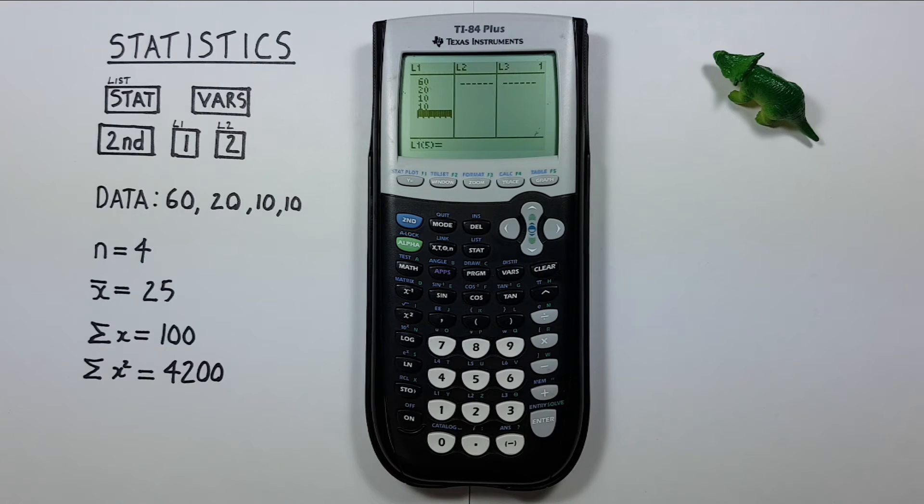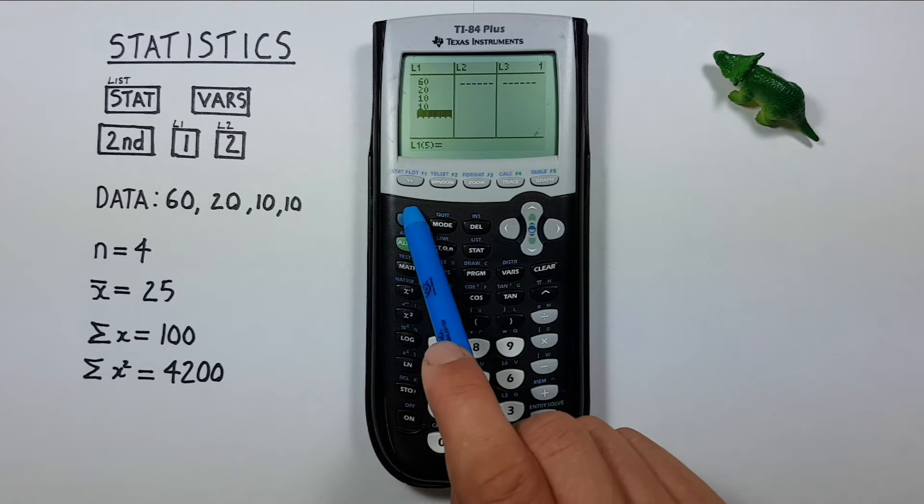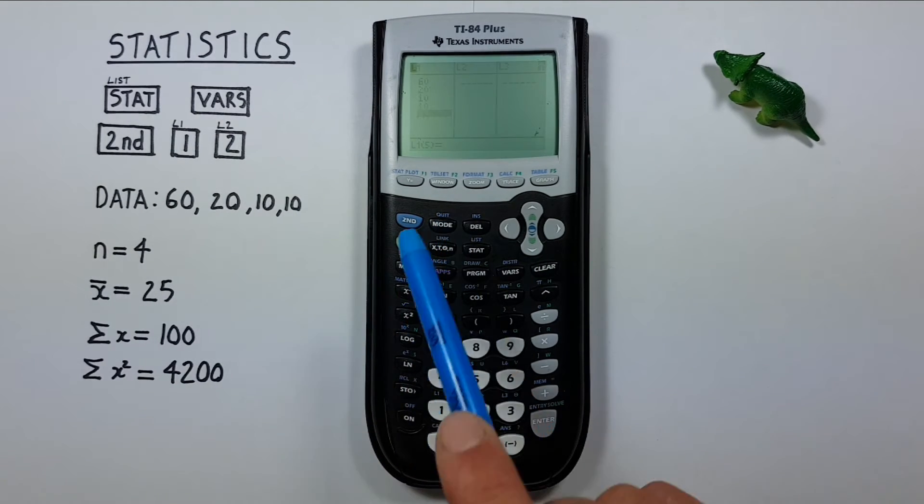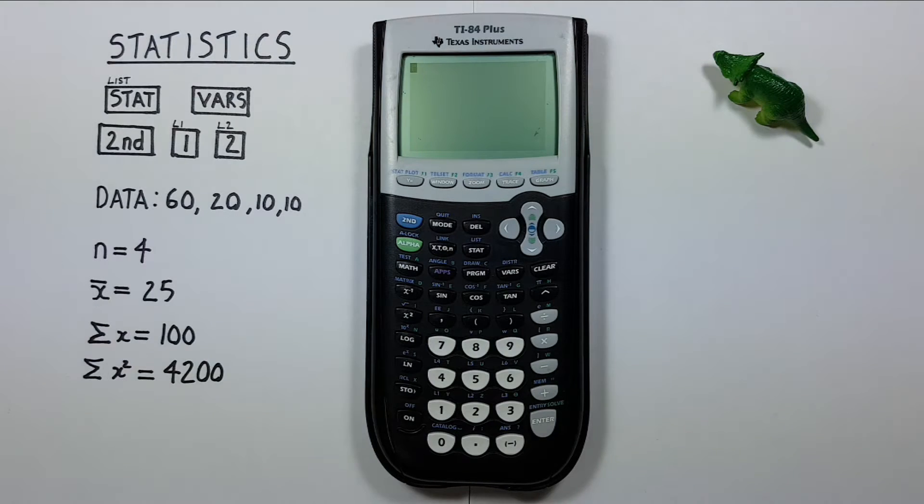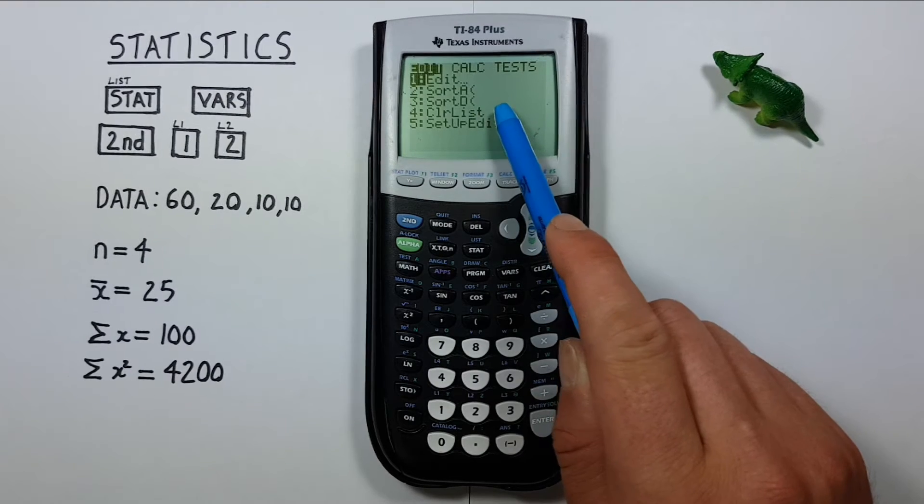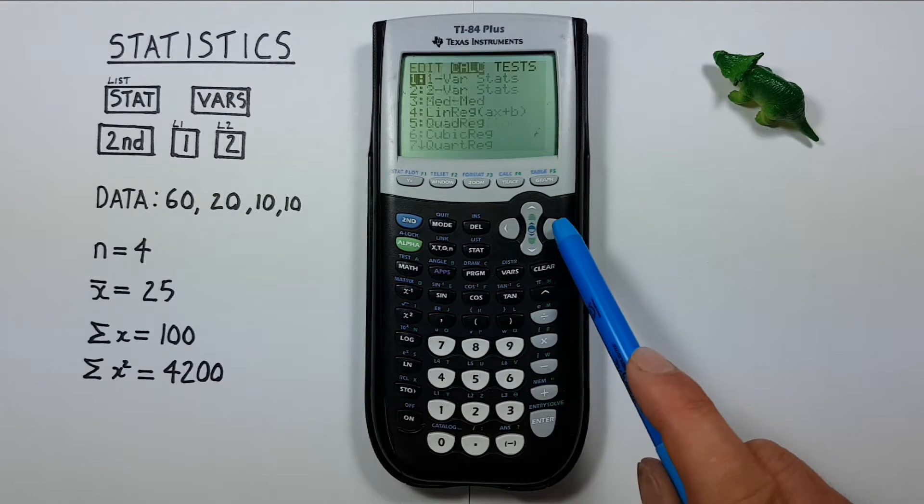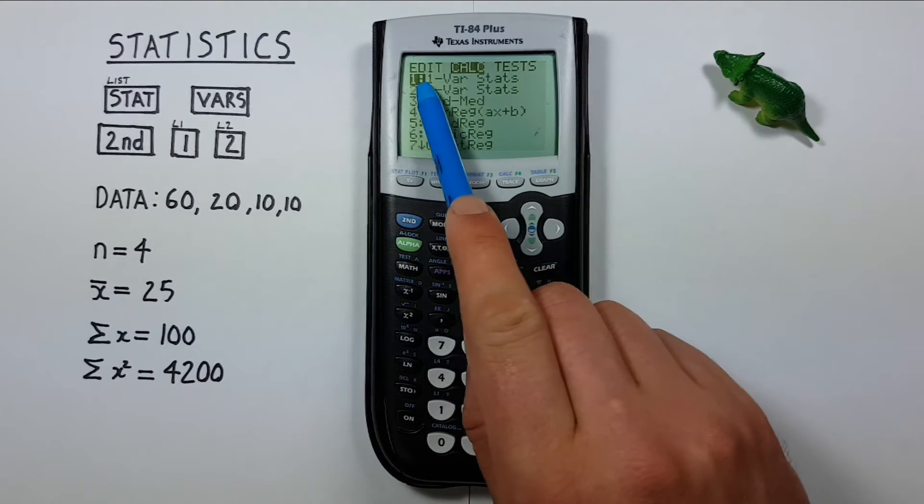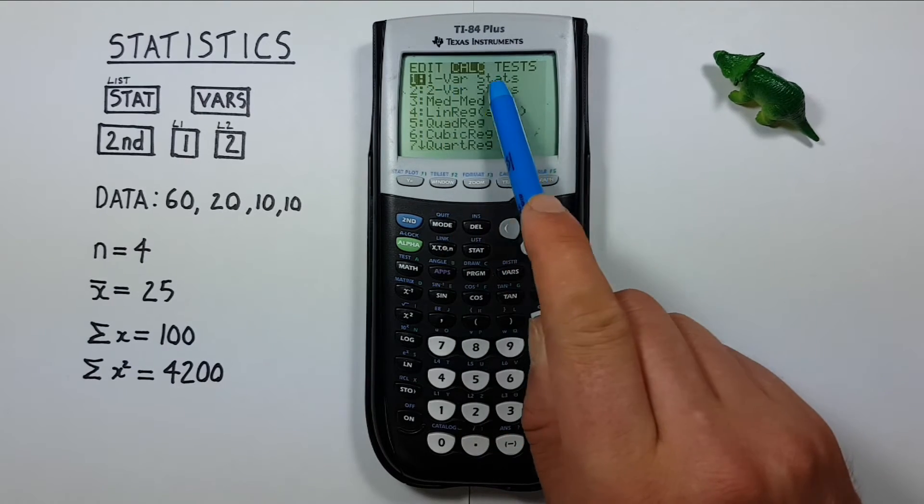When I'm done with this I can exit out of my lists by pressing the second MODE key which is QUIT. Now to look at my stats I press the STAT key. That brings us back to this menu. And if we scroll over to the right one, and select the first option here which is one-var stats.